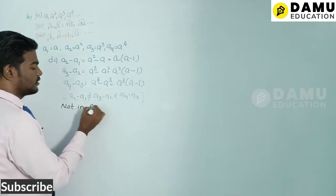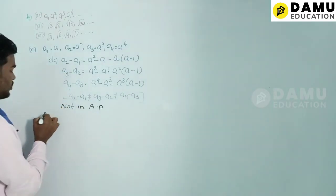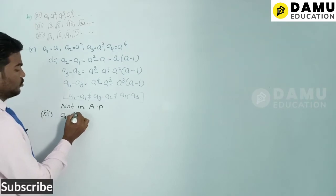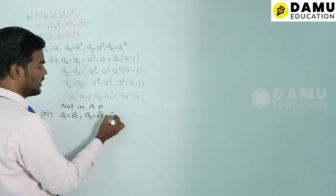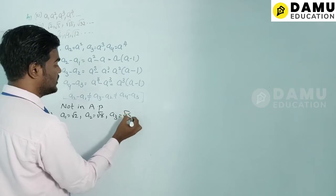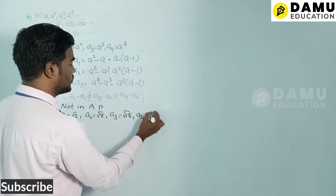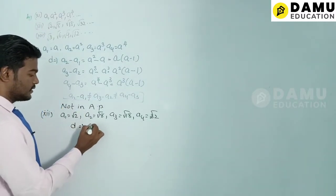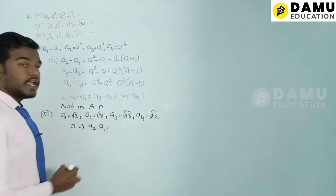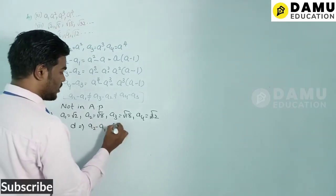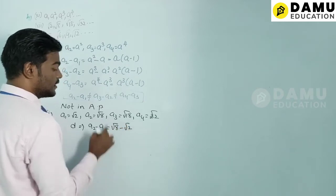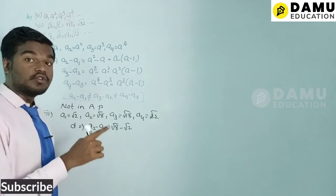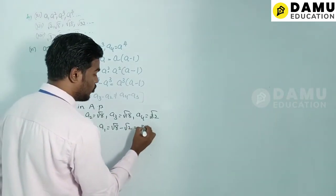For the twelfth series: a1 = √2, a2 = √8, a3 = √18, a4 = √32. The common difference d = a2 − a1 = √8 − √2. We write √8 = √(4×2) = 2√2.